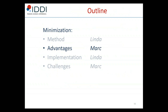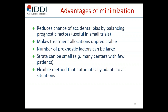As you can see, the methods behind minimization are very straightforward, and using stochastic minimization still leaves some room for chance in the allocation. Now that I've presented the methods, Mark will discuss some advantages of minimization. The first advantage is that it reduces the chance of accidental bias by balancing prognostic factors. This is particularly useful in small trials. In very large trials of several hundreds or thousands of patients, things tend to balance out just by chance alone, and you don't have to worry about imbalances. But in small-scale trials, such as phase two trials with limited patient numbers, it is particularly advantageous to balance treatment arms with respect to prognostic factors.